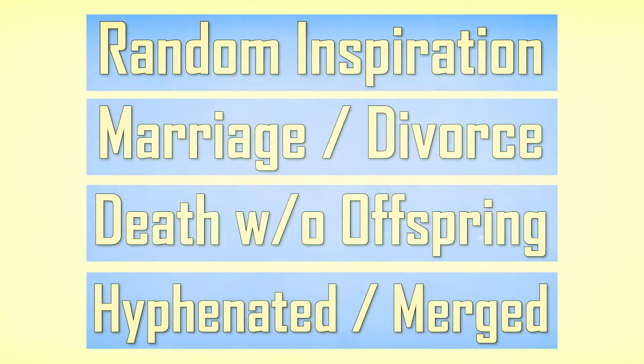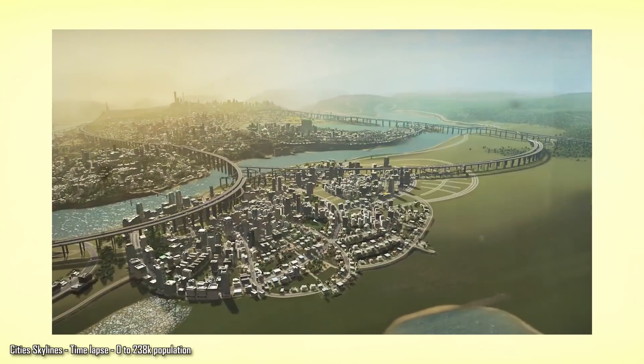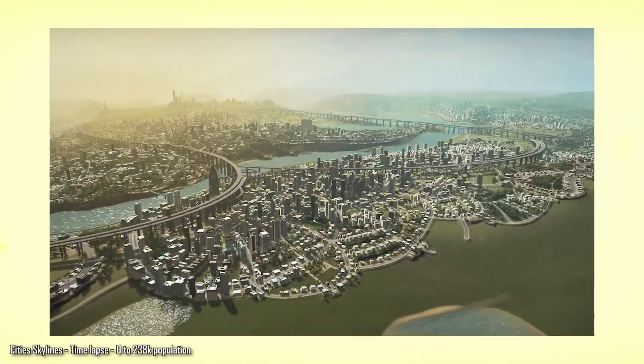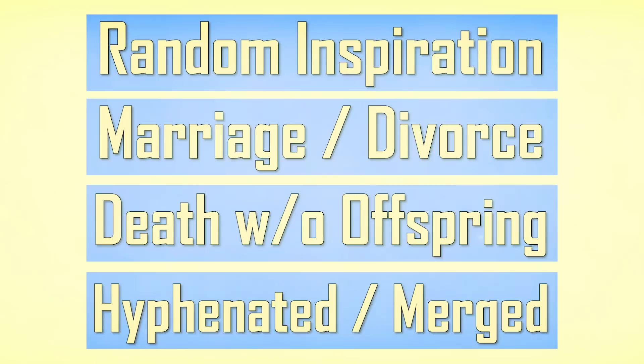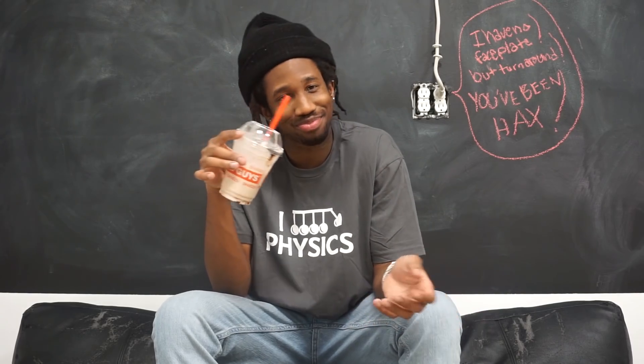Those are the focal points for our simulation. We will generate a population of citizens, let them live their lives, ultimately trying to find a mate — and those four cases are how they're going to add and remove last names from the simulation. Simple and to the point. Commence the coding.